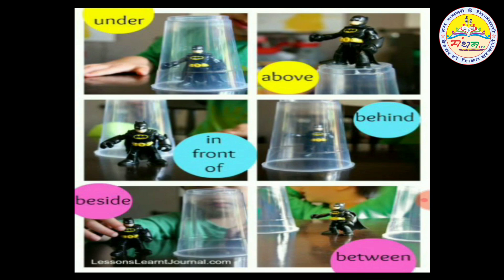In the second picture, where is the toy? It's under the glass. What will the sentence be? The Batman is above the glass.